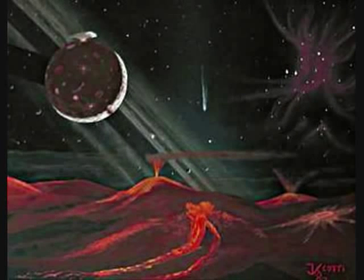The Precambrian Era started approximately 4.5 billion years ago, starting with the formation of Earth. Back then, the Earth was just a flaming ball of gas. Its climate was about 18,000 degrees Fahrenheit. Also, it lasted over 85% of Earth's history.